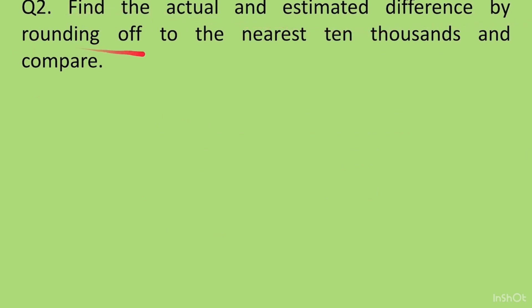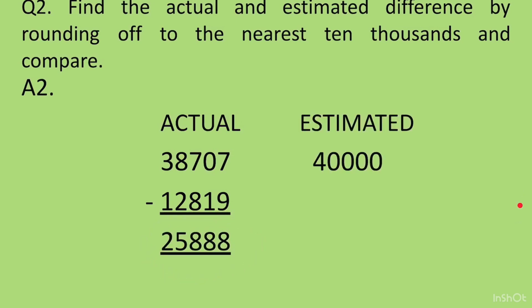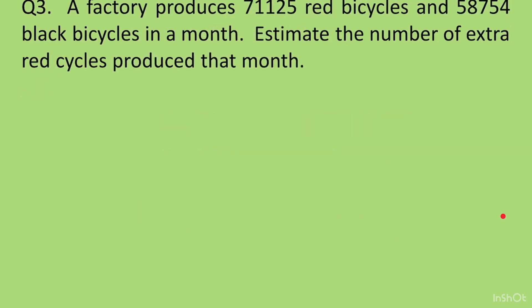Question 2: Find the actual and estimated difference by rounding off to the nearest ten-thousands. The actual difference of 38707 and 12819 is 25888. For the first number, we check the thousands digit, which is 8 — since 8 is greater than 5, we change 3 to 4, giving 40000. For the second number, the thousands digit is 2 — since 2 is less than 5, the ten-thousands digit stays 1, giving 10000. So 40000 minus 10000 gives an estimated difference of 30000.